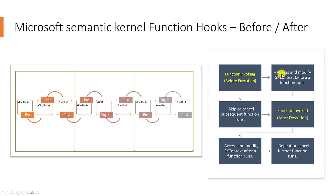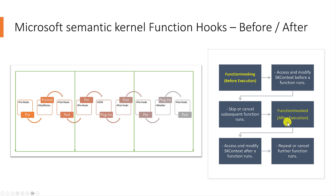Function invoking is used to access and modify the Semantic Kernel context — that means variables before a function runs. You can modify the values, for example, to modify the prompt before passing it to a function. We can also take the decision in the pre-hooks whether to skip or cancel the function execution.